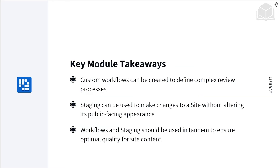We have some key module takeaways here. First of all, custom workflows can be created to define complex review processes, and we can model this after real-life hierarchies and chains of events. Staging can be used to make changes to a site without altering its public-facing appearance, so we can work on things behind the scenes and then publish them live. Workflows and staging should be used in tandem to ensure optimal quality for site content, and we'll take a look at that process at the end.